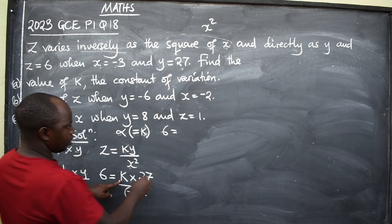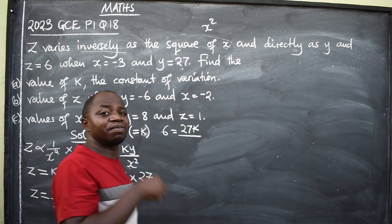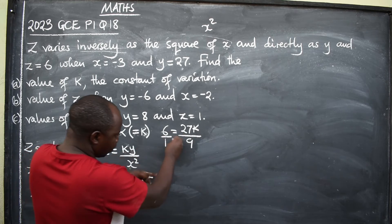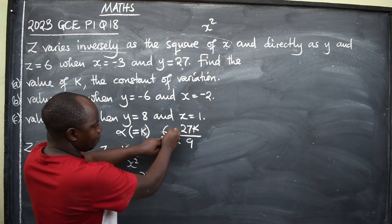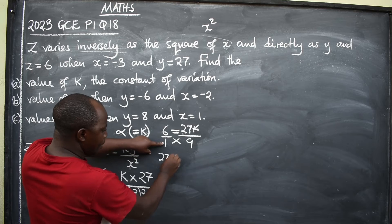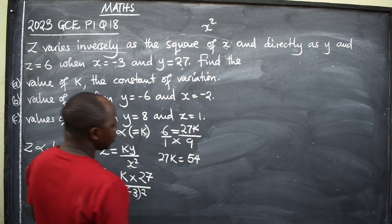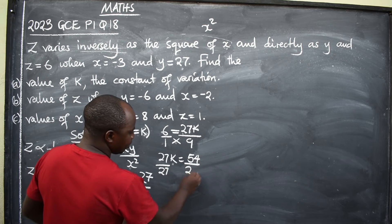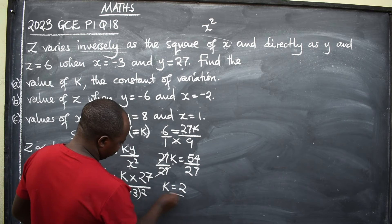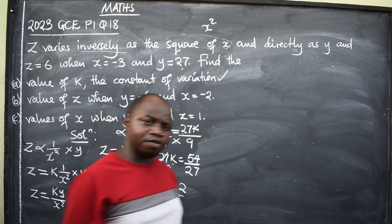6 equals 27K over negative 3 squared. Negative 3 squared is negative 3 times negative 3, which gives 9. So 6 equals 27K over 9. Cross multiply: 1 times 27K is 27K, and 6 times 9 is 54. Divide both sides by 27: 54 divided by 27 is 2. So K is equal to 2. You have answered the first part — the constant of variation is 2.